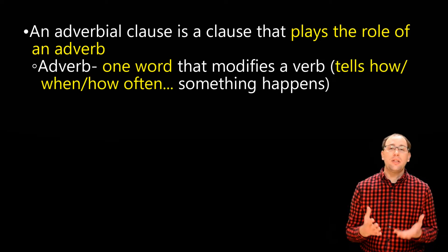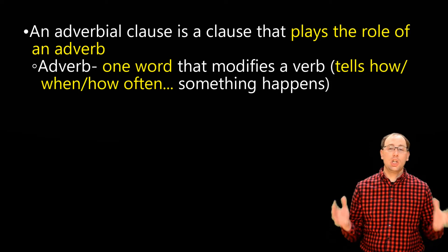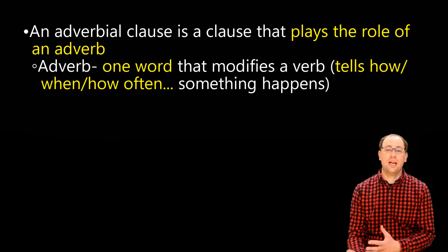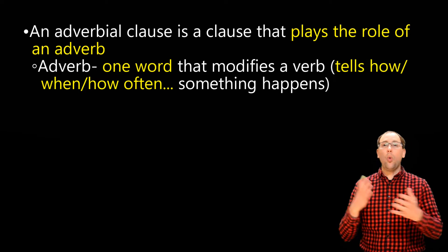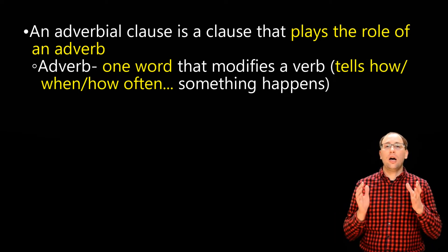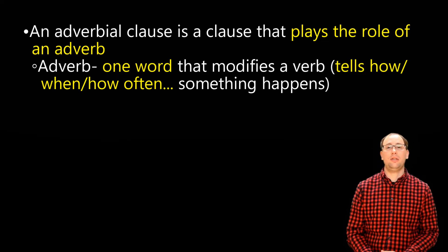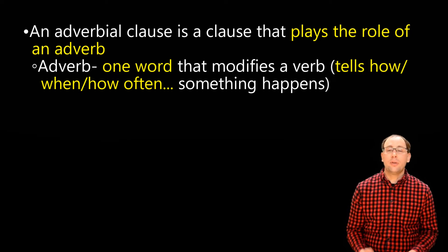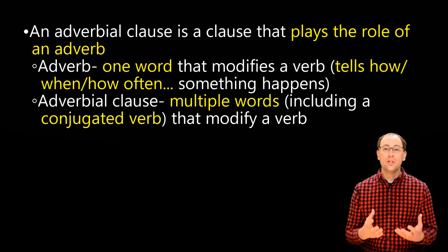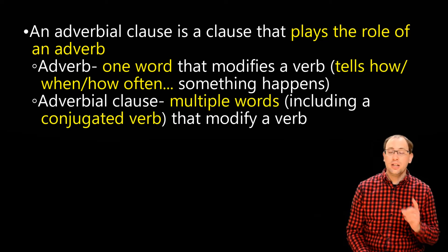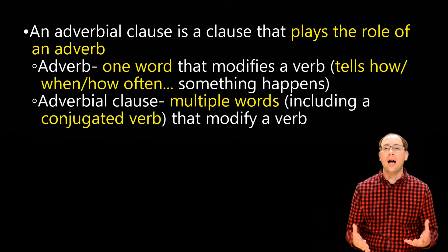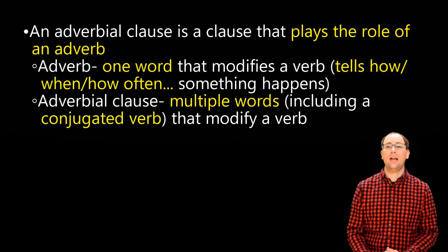What does it mean to modify a verb? A verb is an action, so an adverb often tells how, when, or how often something happens. As we'll see in today's examples, we're also going to look at clauses that tell under what circumstance or give additional information about why something happens. In all cases, adverbs tell additional information about the situation in which an action takes place. An adverbial clause is multiple words, including a conjugated verb, that plays the same role — telling how often, how, why, when, etc., an action takes place.